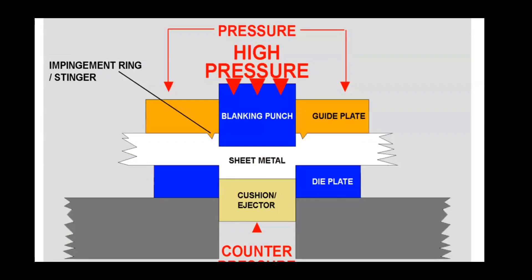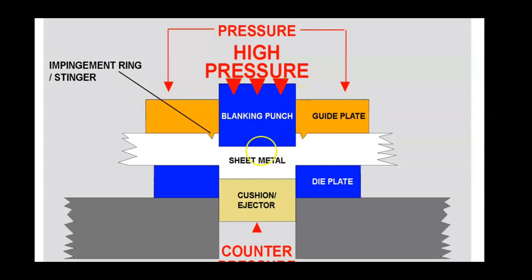This is very clear from the figure. You see here — the blanking punch is this, and this is the sheet metal. The sheet metal is pressed with the help of a guide plate, so that the guide plate keeps the sheet metal in its own place without disturbance. In blanking, when the punch comes down, it removes a portion of the sheet metal in the form of the die shape. This removed portion of the sheet metal is called the blank, and the process is called blanking.